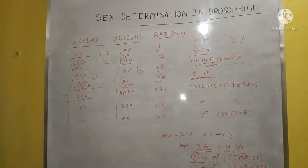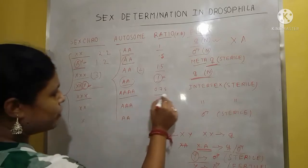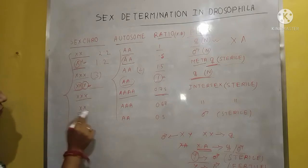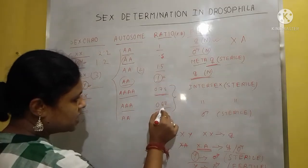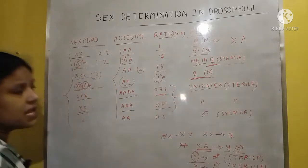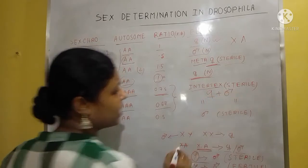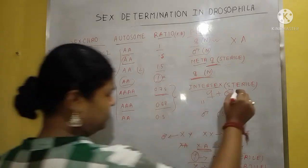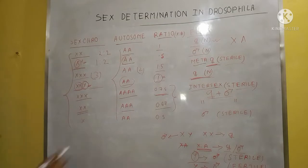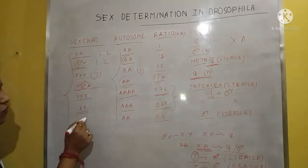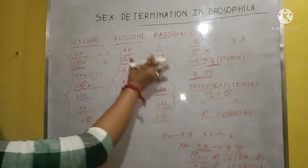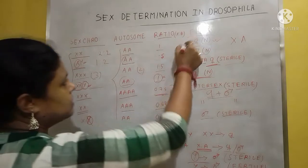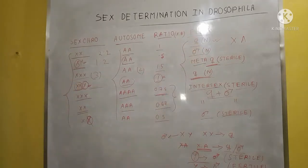When the number of X chromosomes is 3 and autosomes is 4, the ratio is 0.75. When X chromosomes is 2 and autosomes is 3, the ratio is 0.67. The range from 0.67 to 0.75 denotes intersex — both male and female characters are present, and it is sterile. In the last case, the ratio is 0.5, which is male, but it is sterile due to the absence of the Y chromosome.